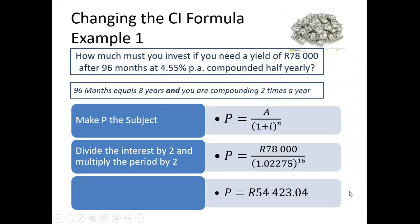But sometimes we are required to change the compound interest formula. And this is typically the way it is asked in the exam. It says, how much must you invest if you need a yield of $78,000 after 96 months at 4.55% per annum, compounded half yearly? Now, the first thing that you will have to see here is it's talking about half yearly, year, there, and months here. So the first thing, we can't work with months and years. We must work in years only. So 96 divided by 12 is eight years.